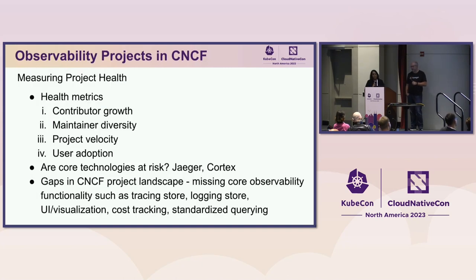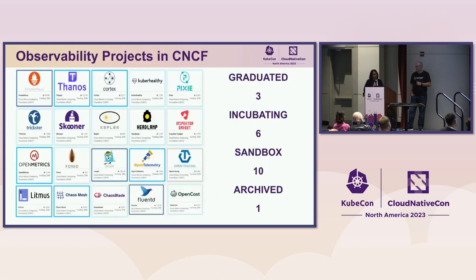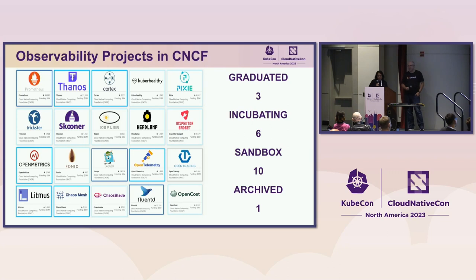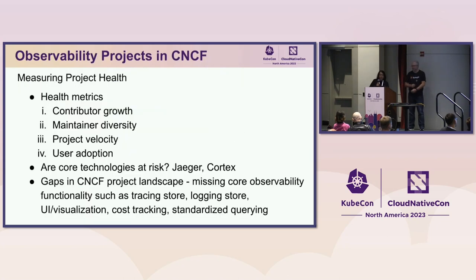Why does this landscape matter? We are interested in seeing a healthy end-to-end pipeline for observability — which includes instrumentation, collection, analysis, visualization, as well as storage. Project health is a very important part of understanding and measuring that. Health metrics that we look at for each project and work with the TOC to synchronize on include contributor growth and maintainer diversity — whether there are multiple contributors involved from different companies and organizations.